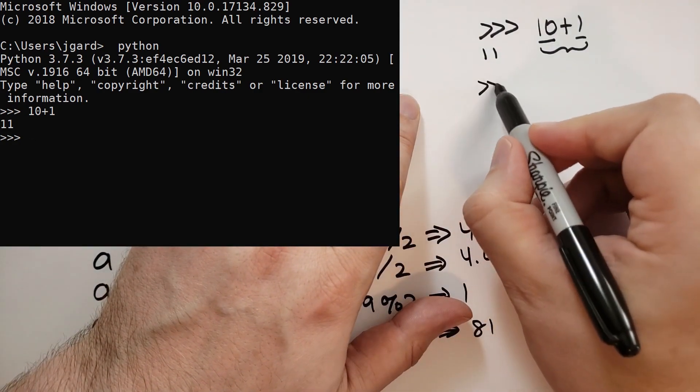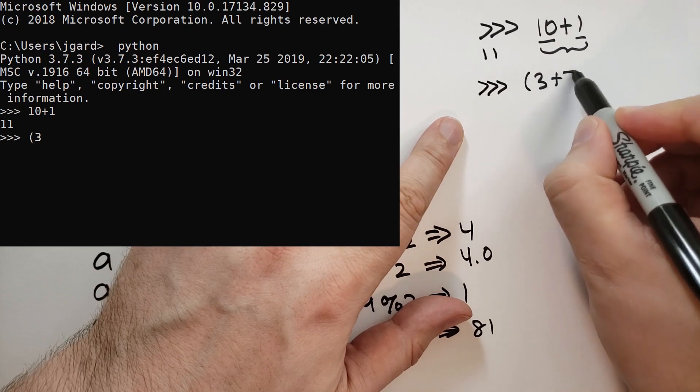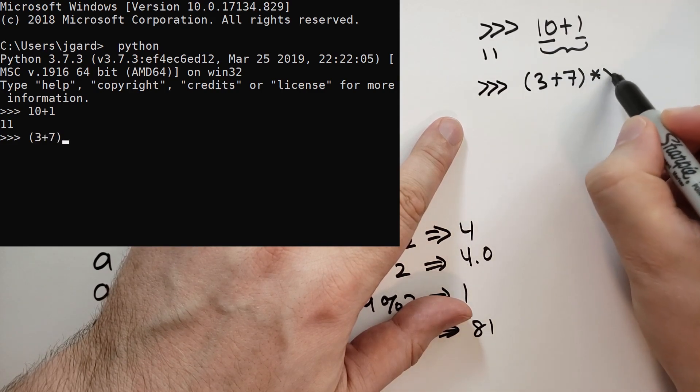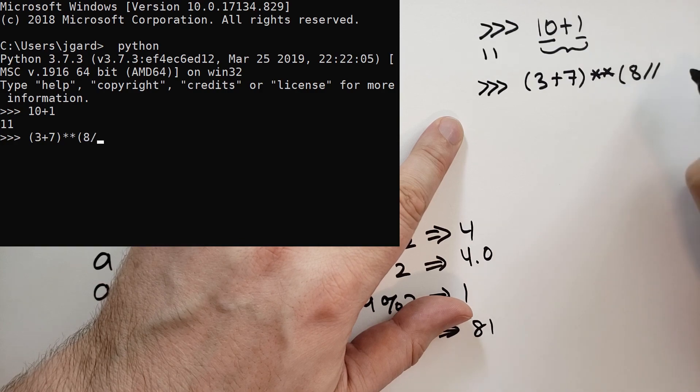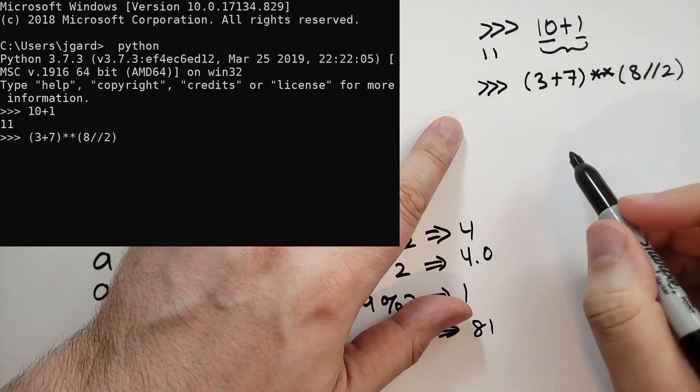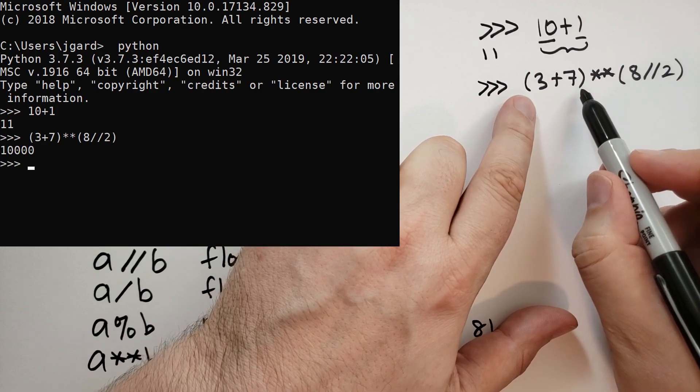Let's do a more complex one. Let's say we have 3 plus 7 raised to the power of 8 floor division 2. So it's going to do what's inside the parenthesis first, left to right.